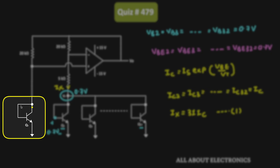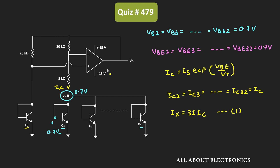Now let us see the collector current of transistor Q1. This op-amp is used with negative feedback, and since it is an ideal op-amp, we can apply the concept of virtual ground. That means the voltage at the inverting terminal V- will be the same as the voltage at the non-inverting terminal V+. The voltage V+ is the same as the voltage at the base terminal of transistor Q1, which is VBE1. So V- = V+ = VBE1.